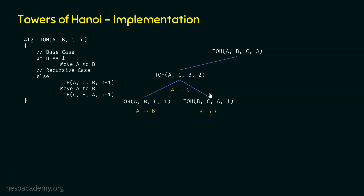We return back through the call stack to TOH(A,B,C,3). We are done with the first recursive function call. Now we need to perform the second statement: move A to B, meaning we move one disk from A to B — the fourth move. Then the next statement is TOH(C, B, A, N-1), so control shifts from TOH(A,B,C,3) to TOH(C,B,A,2).